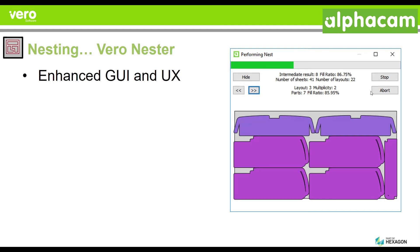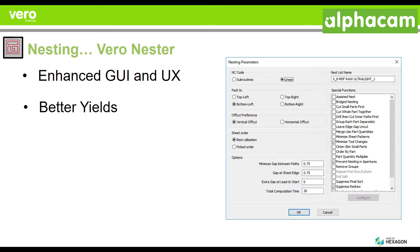You will also be able to simply stop the entire process and completely negate the nesting. You will also be able to get significantly better yields due to our new and enhanced Vero nesting algorithm. You will be able to use best utilization or picked order. Best utilization is a fantastic option that allows you to feed the software multiple different sheet sizes and let the software figure out what is the best combination of sizes to give you the best possible yield for a given job.